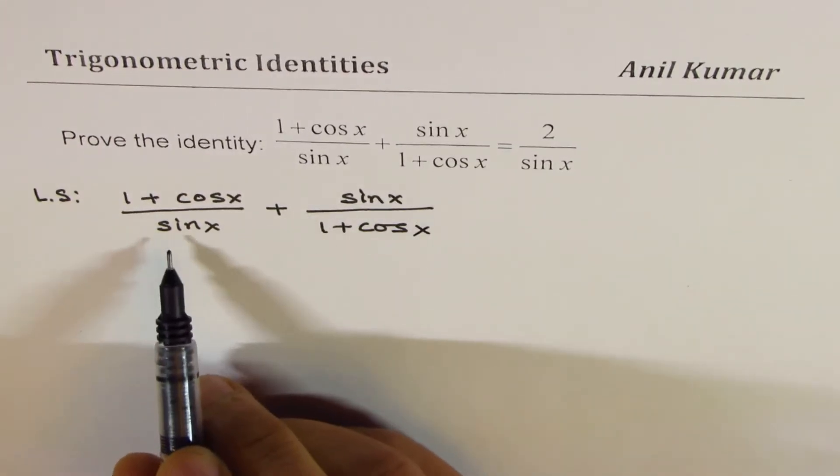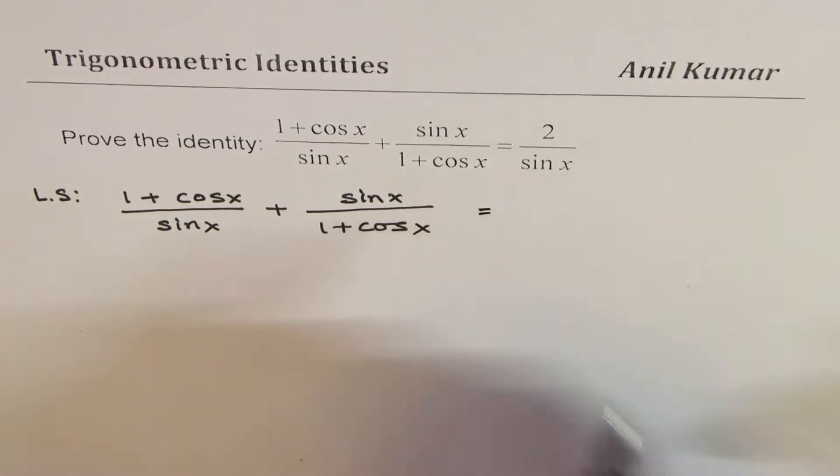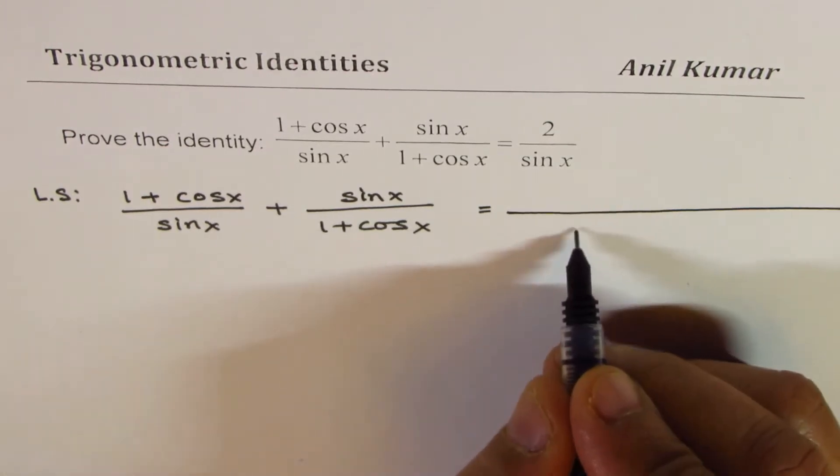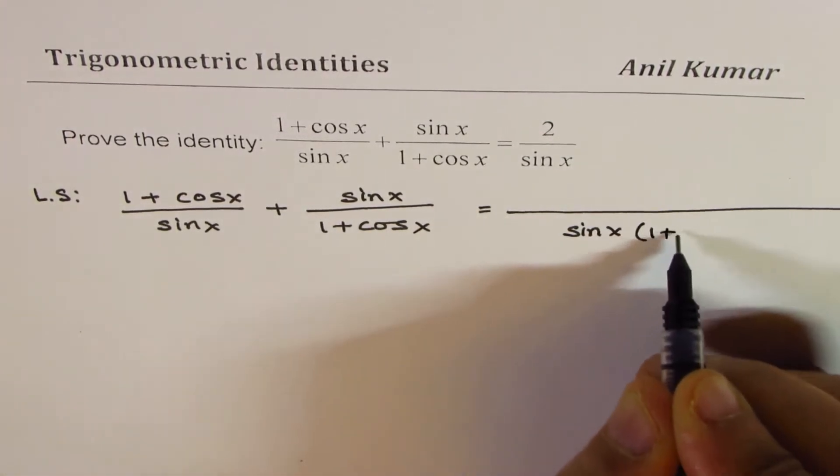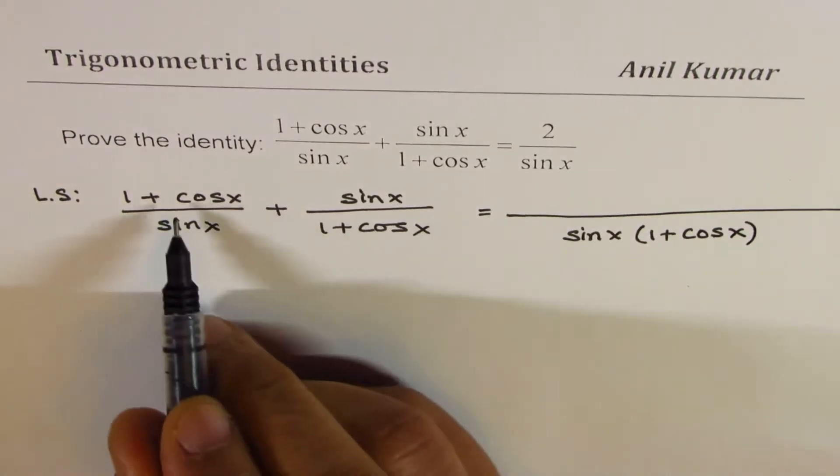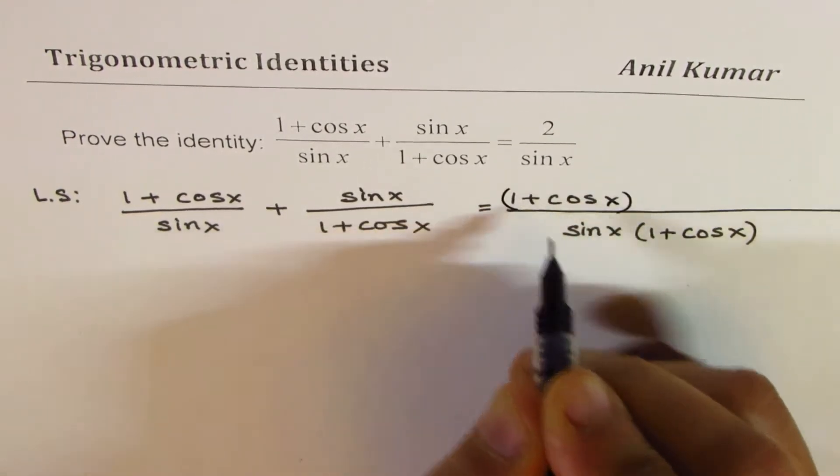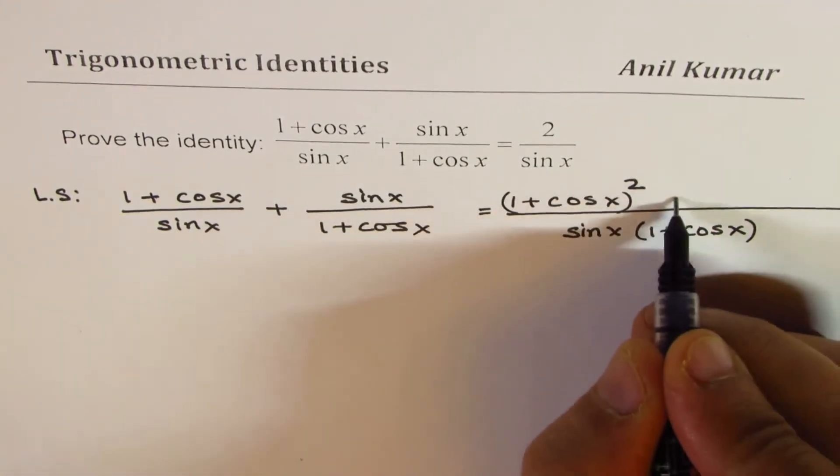Now, we can take the common denominator as product of sin x and cos x. Then what do we get? We get sin x times 1 plus cos x in the denominator. Cross multiply, so we get 1 plus cos x whole square plus sin square x.